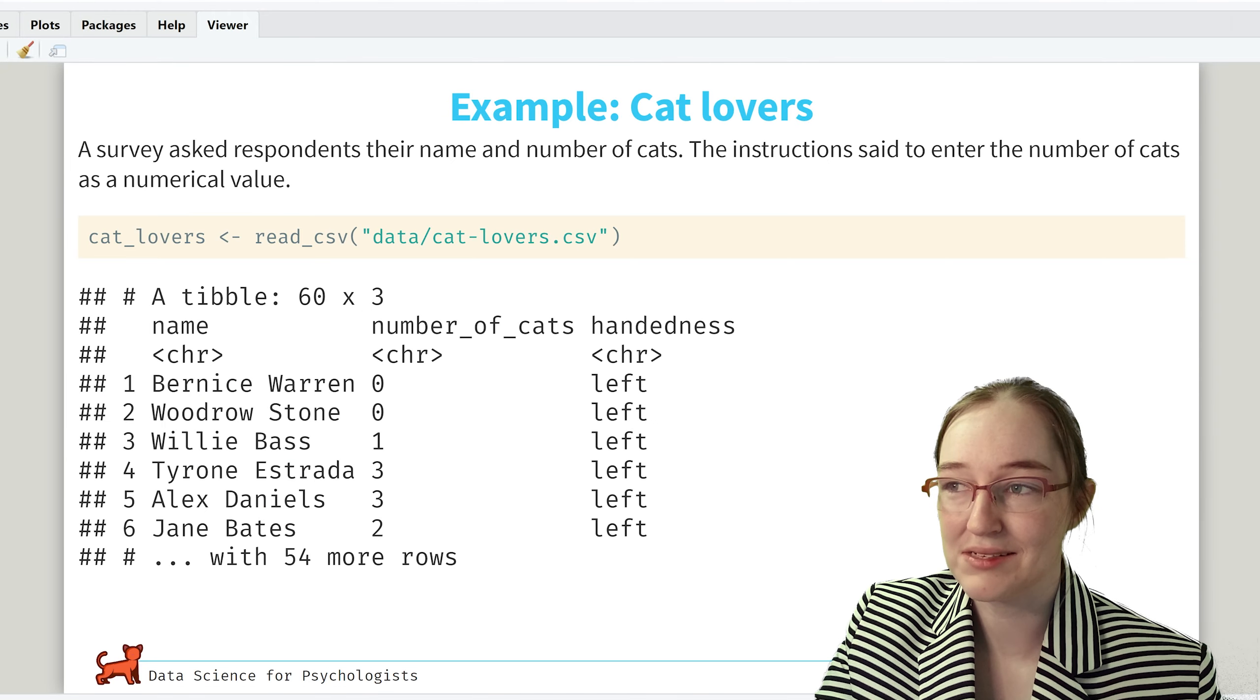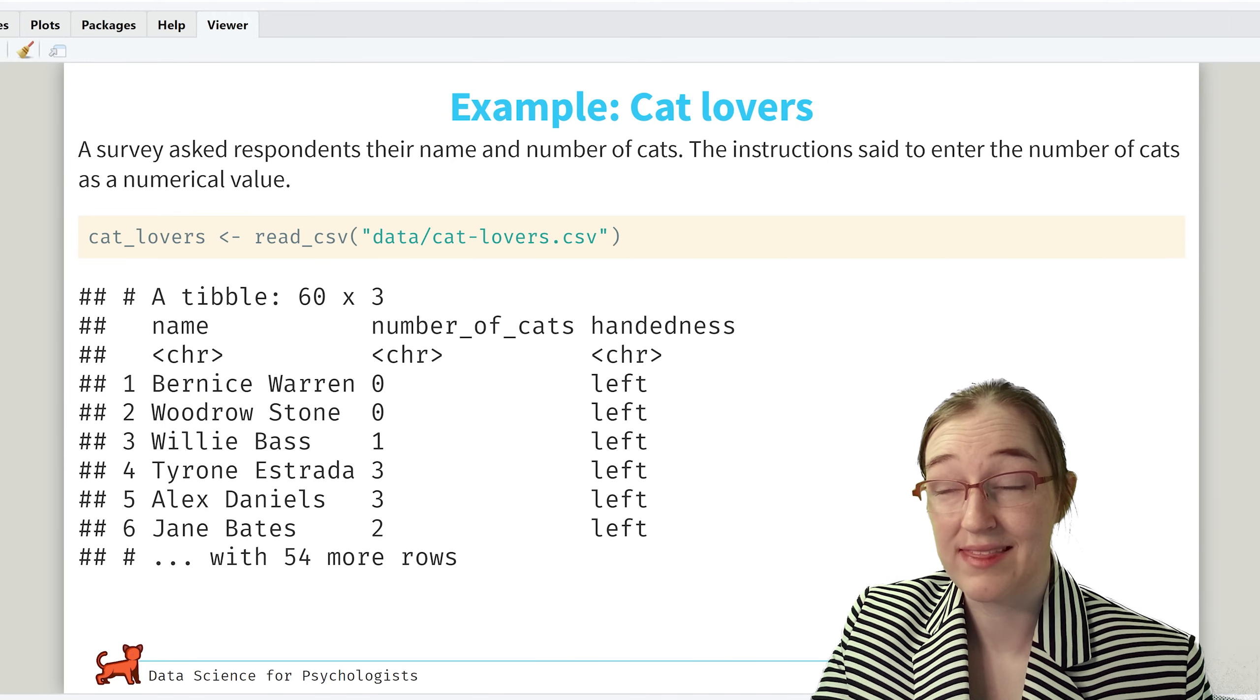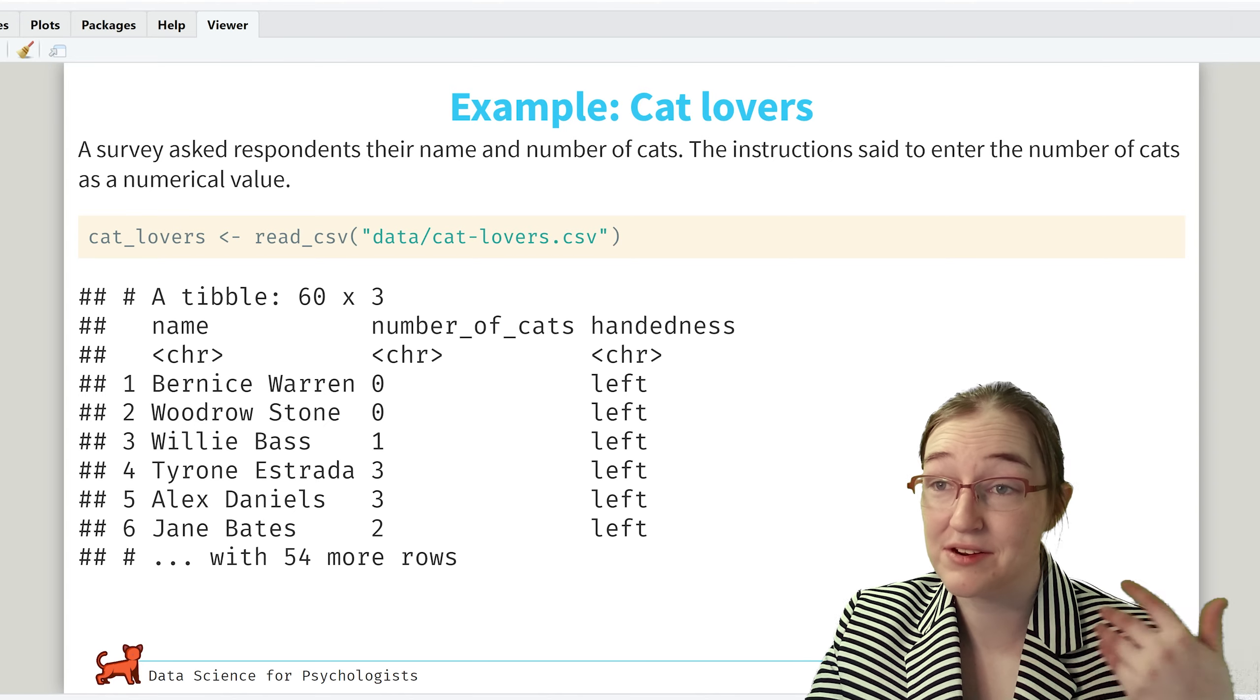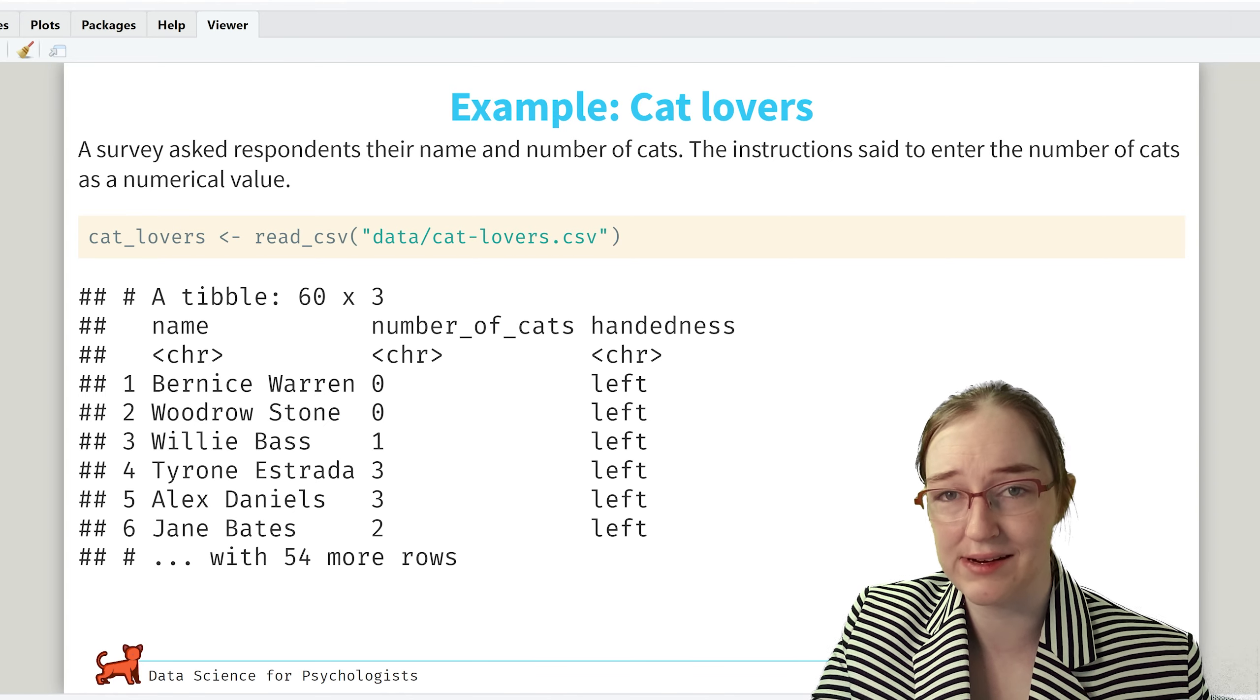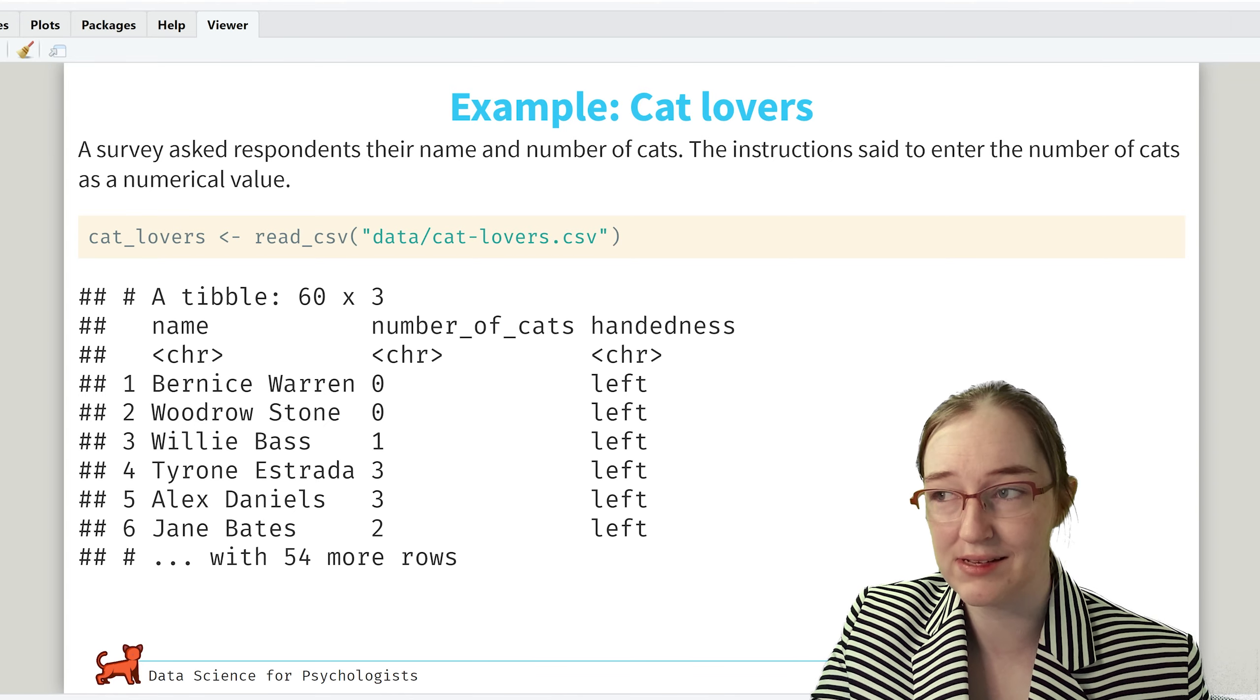So here's a survey that asked respondents for their name, their number of cats, as well as their handedness. The instructions said to enter the number, or enter the number of cats as a numerical value. So let's hope they did that. Because we know how great folks are at instructions.